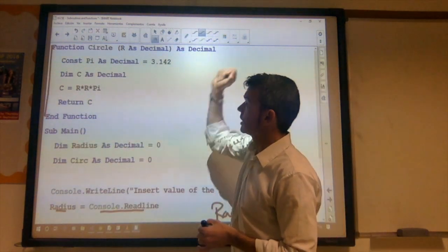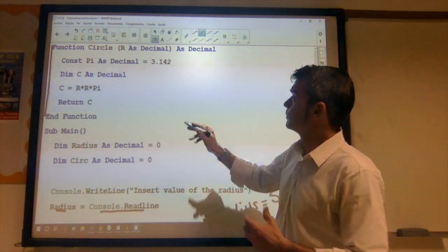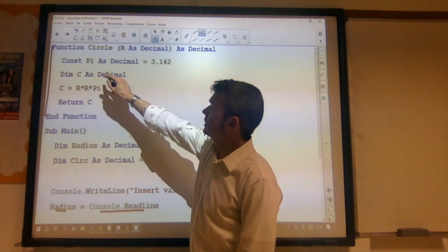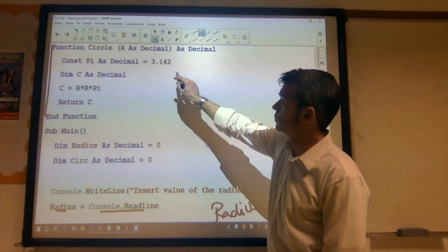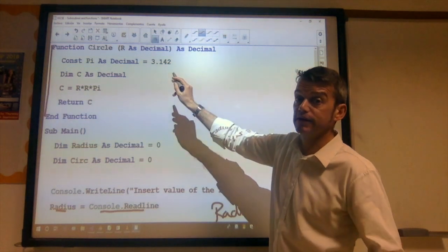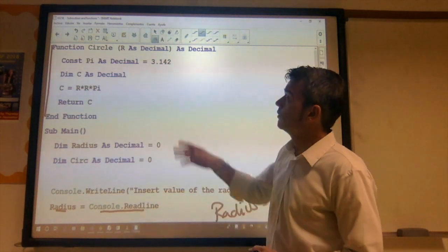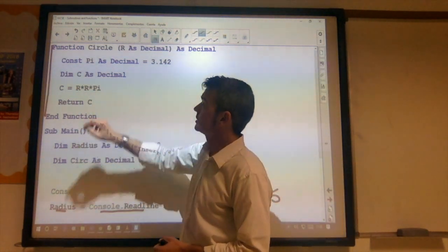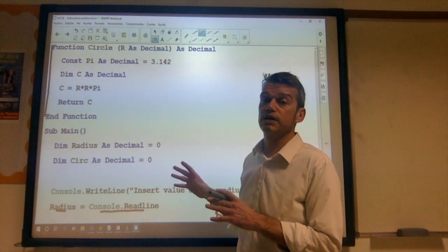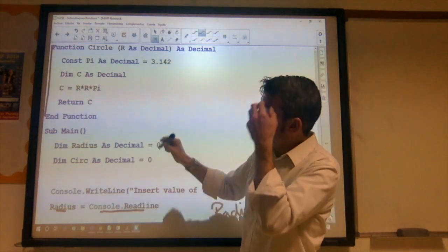Okay, and it's going to output that as a decimal. So a real number. We declare the constant pi as 3.142. Makes sense. Pi is constant because pi doesn't change. Then we declare our variable c as a decimal. c we're going to use as our result. We're going to store our result in c.